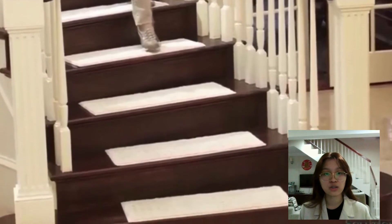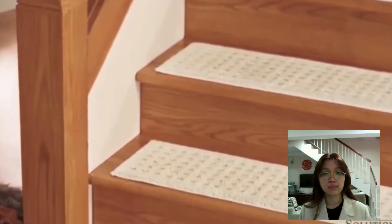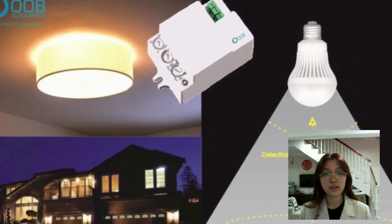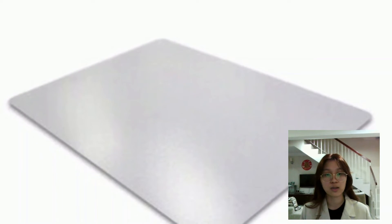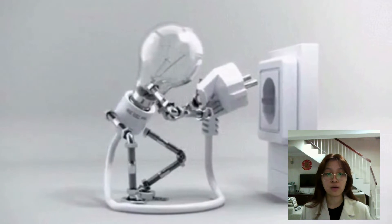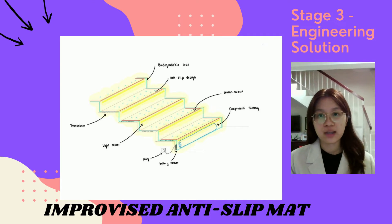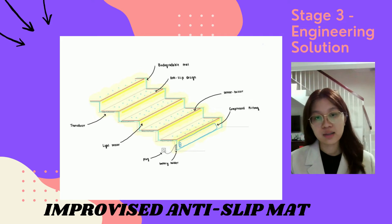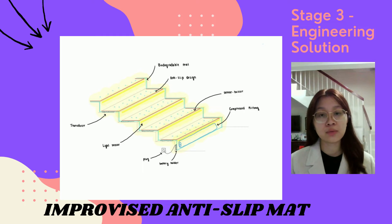Our innovation is to install an anti-slip mat on the staircase. To prevent slips and falls from the staircase, it will increase the friction between our foot and the staircase. It contains a light sensor that will light up in the dark. It also has a sensor buzzer that will give a warning to the user when there is danger. It also has an airbag that prevents people from getting injured when falling from the staircase, and it generates electricity to light up the sensor. This is our improvised stair mat, which is not available in the market yet. It has an anti-slip design which increases friction between the floor and our foot to prevent slips and falls from the staircase.